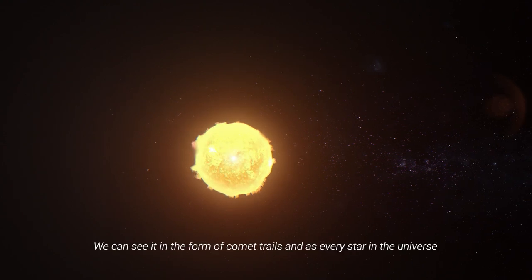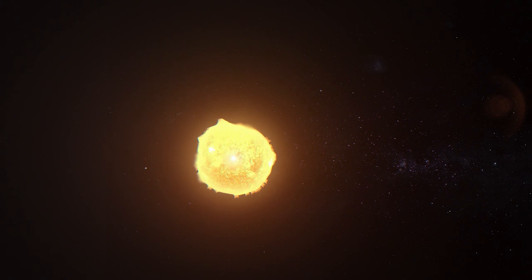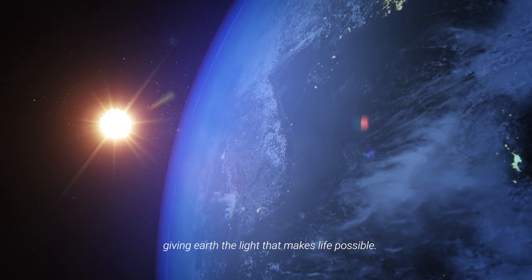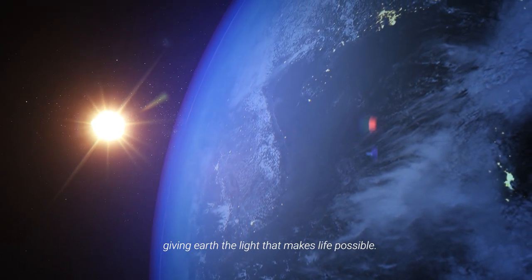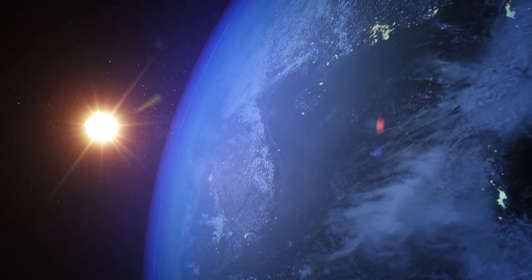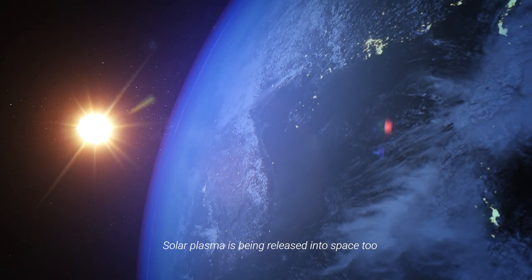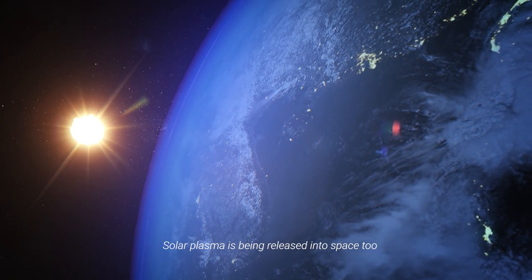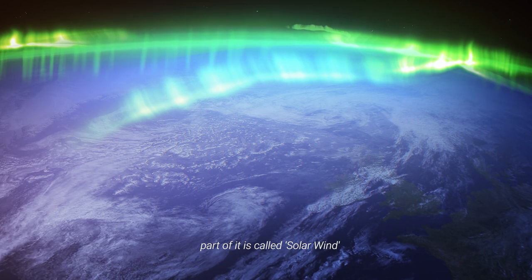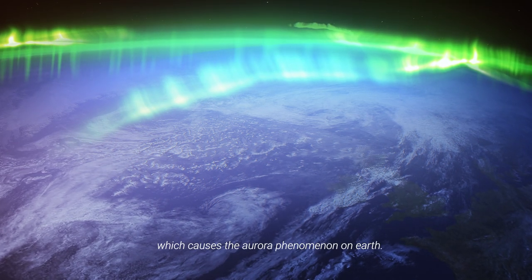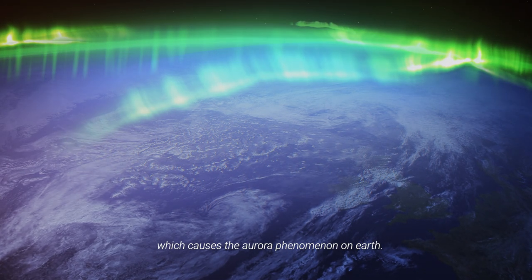We can see it in the form of comet trails and as every star in the universe, including our sun, which radiates solar plasma, giving Earth the light that makes life possible. Solar plasma is being released into space too. Part of it is called solar wind, which causes the aurora phenomenon on Earth.